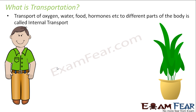Transport of oxygen, water, food, hormones, etc. to different parts of the body is called internal transport. It is known as internal transport because the transportation takes place within our body — it is not visible from outside. That is why it is called internal transport.